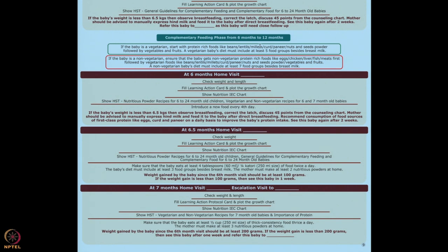Do not start with apple puree, fruit puree, or vegetable puree. Start with protein-rich food. If the baby is non-vegetarian, go ahead and start with eggs, fish puree, meat puree, chicken puree — you do not have to wait until one year. Then you can add dal, millets, dahi, paneer, vegetables, and fruits.